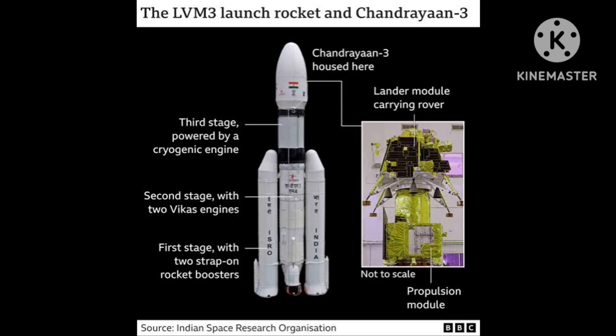Before going into depth on propellants, I want to discuss some terms required during the study of propellants. First, cryogenic rocket engine. This is a rocket engine that uses a cryogenic fuel and oxidizer — that is, both its fuel and oxidizer are gases which have been liquefied and stored at very low temperature. For example, hydrogen is stored at minus 183 degrees Celsius and oxygen is stored at minus 253 degrees Celsius in the appropriate tank.